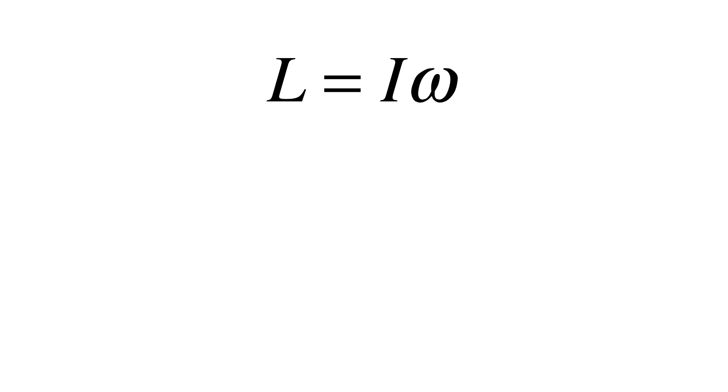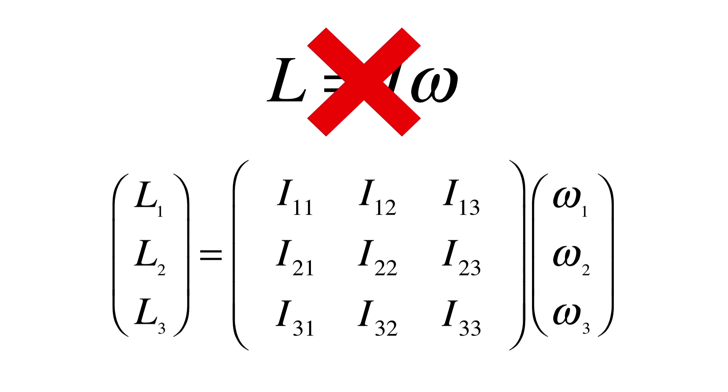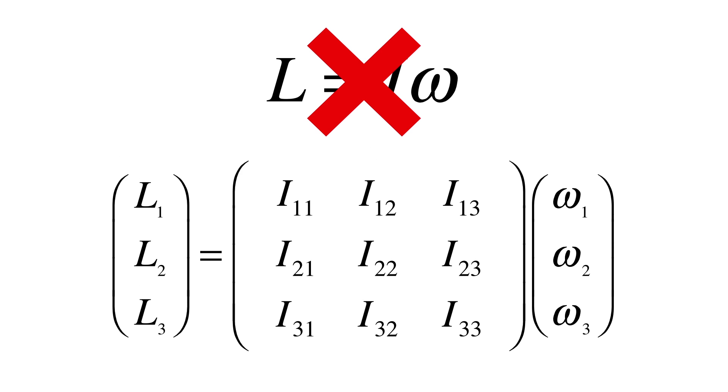The first step in solving this problem mathematically is by noting that, unlike most introductory physics courses leave one to believe, the angular momentum of a spinning object may not be in the same direction as the angular velocity. That is, the relation angular momentum equals moment of inertia multiplied by the angular velocity is generally not the entire story and is in fact only a special case of a more general solution. Instead, we must replace this equation with the given generalized version where the middle matrix is defined as the inertia tensor and holds the products of inertia.